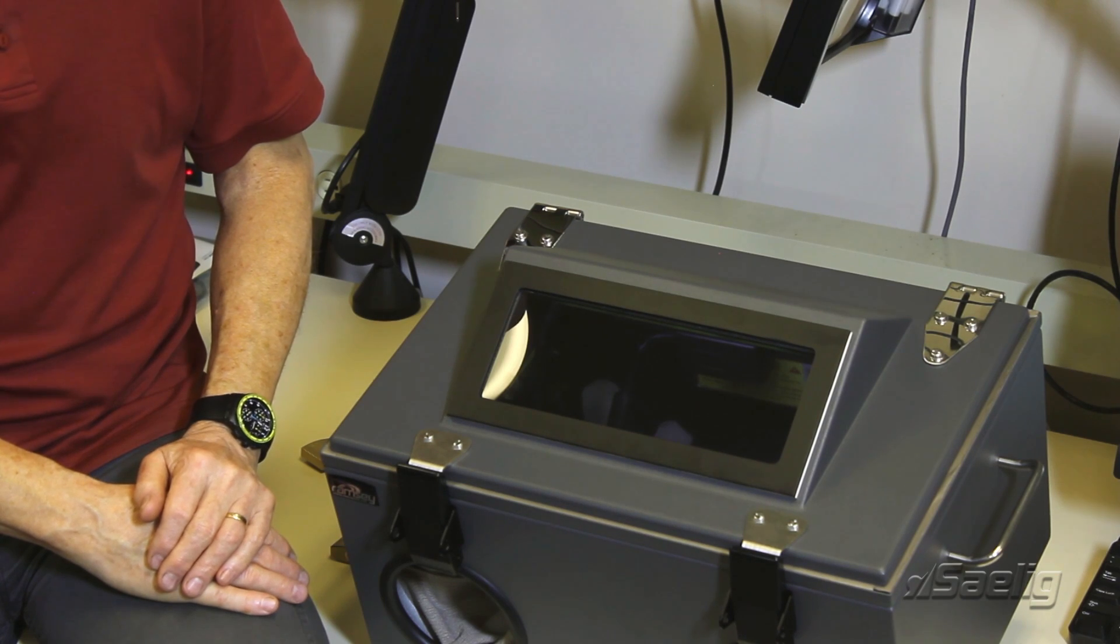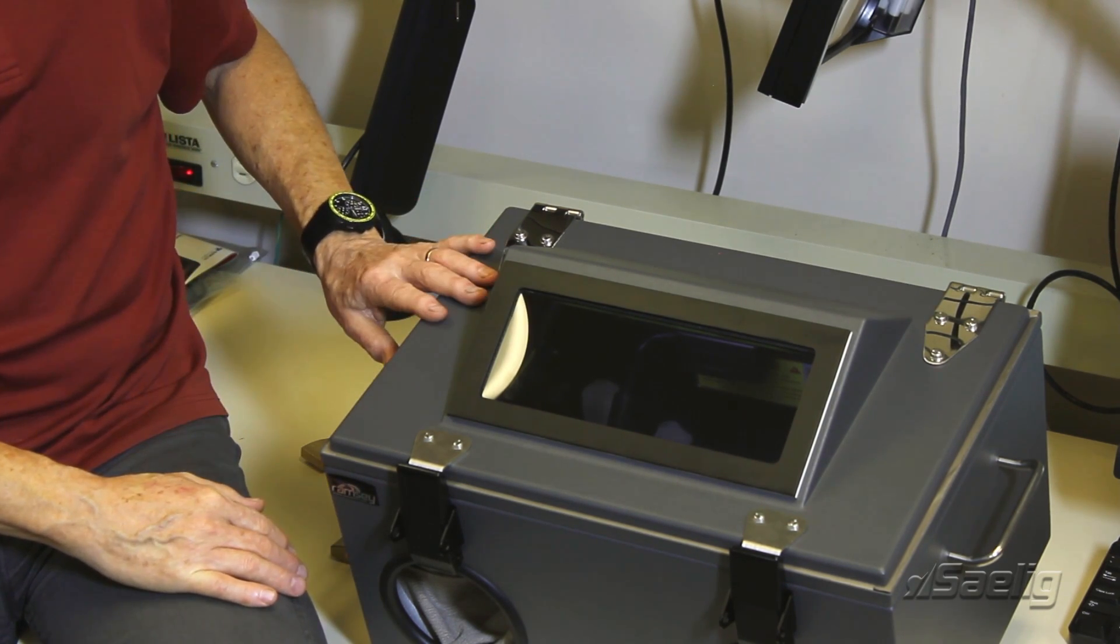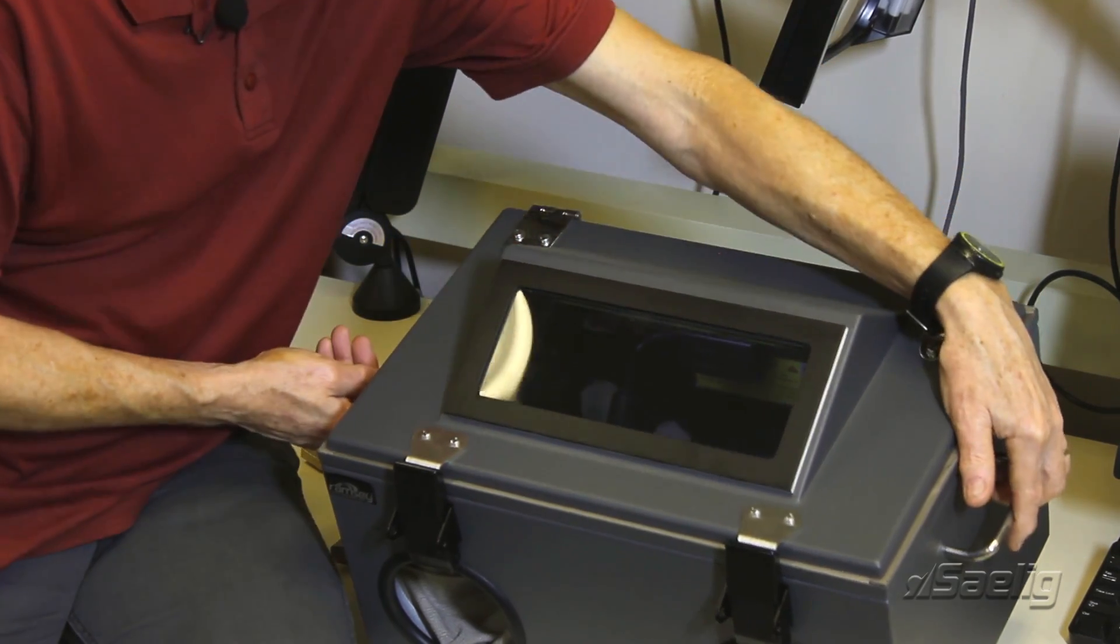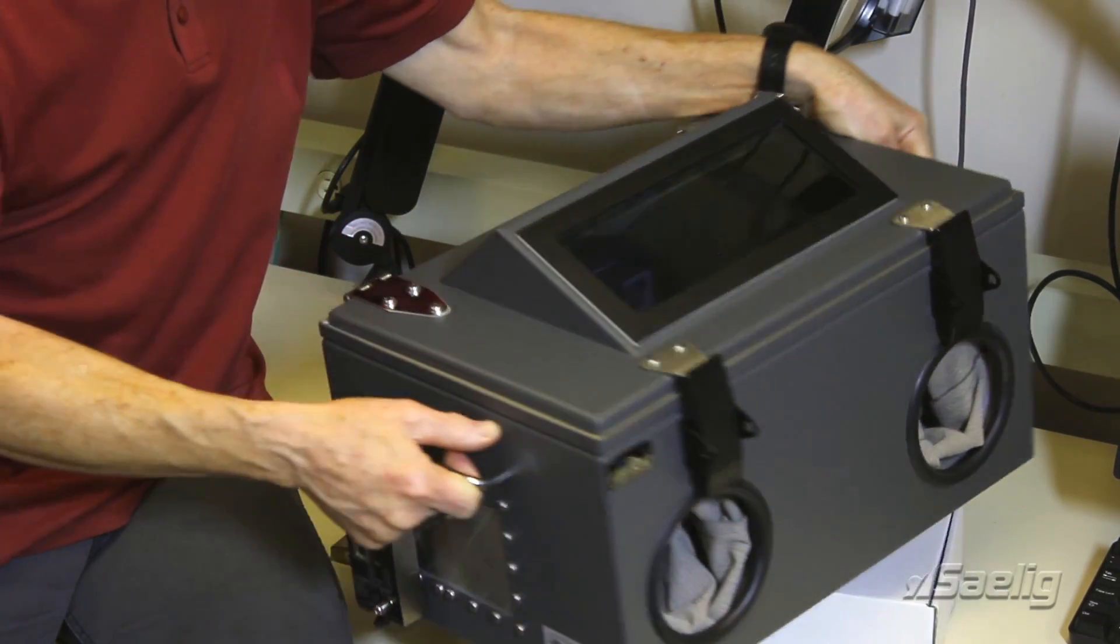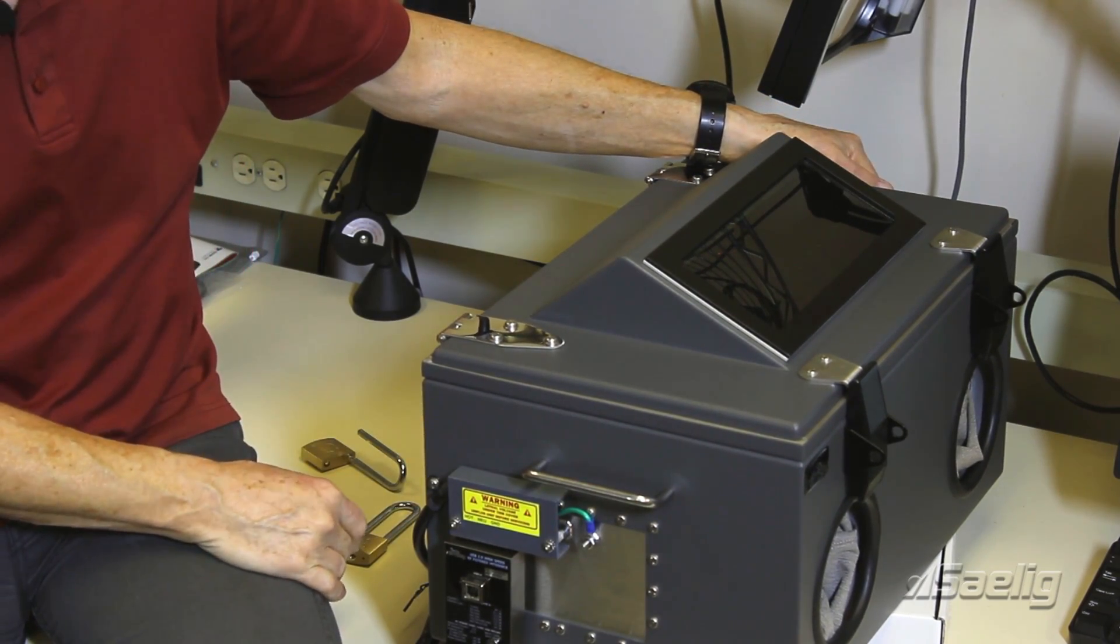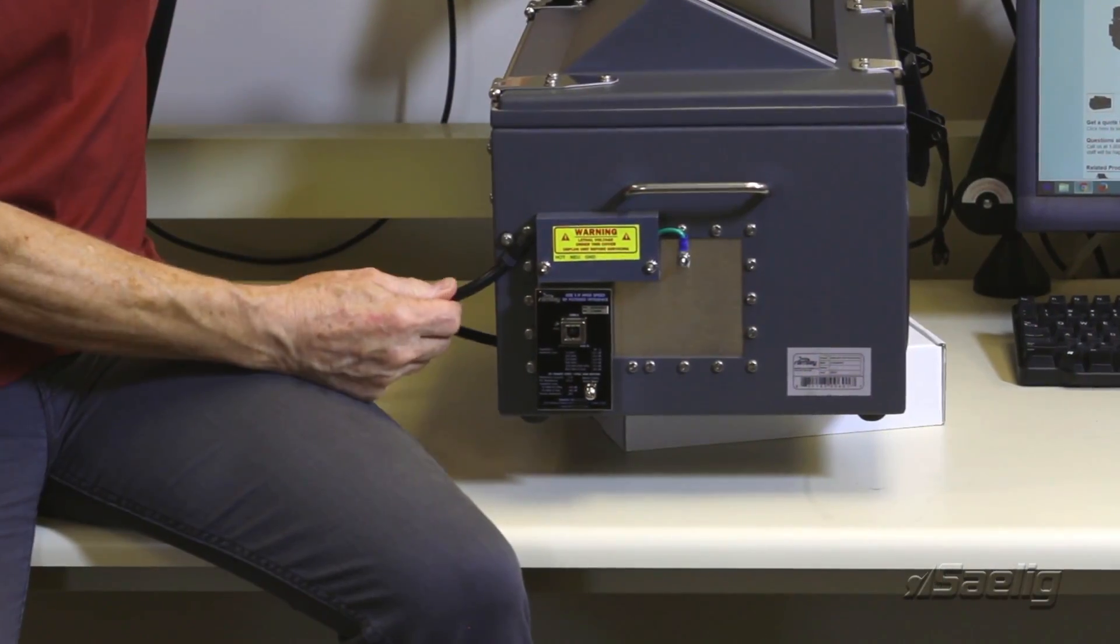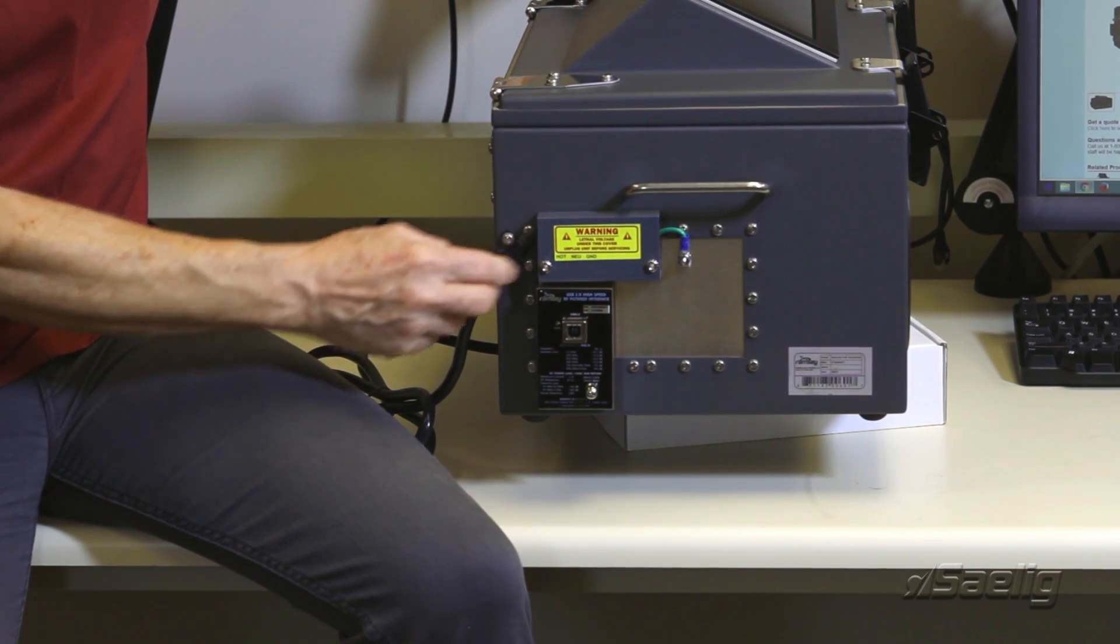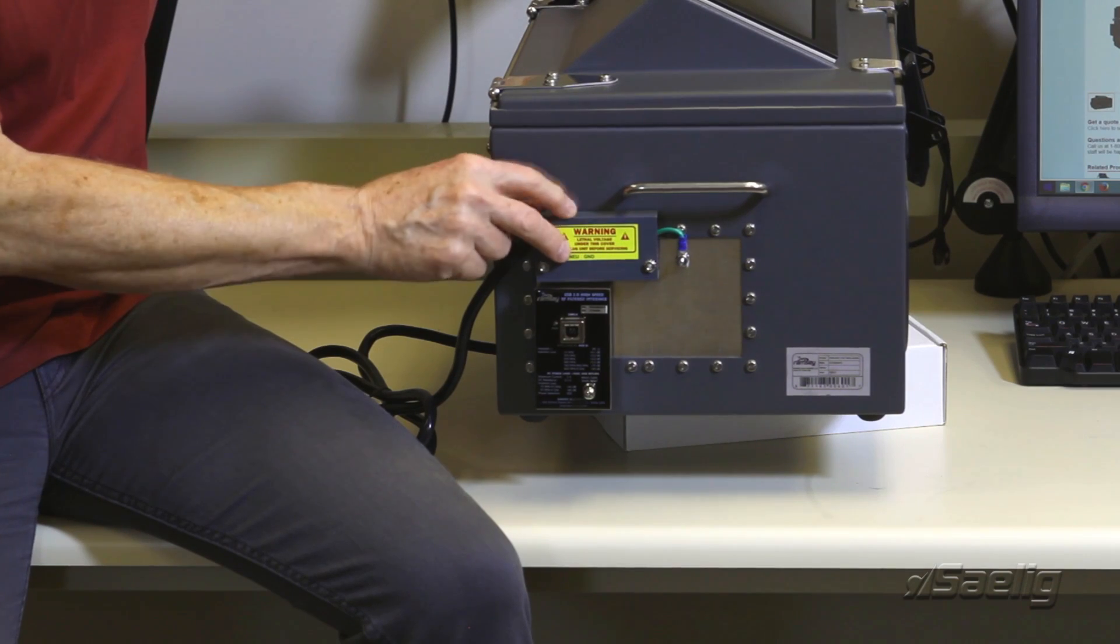The other features that I want to show are on the side panel here. You can see the nice rugged power cord that's coming in to provide AC power through this filter arrangement.